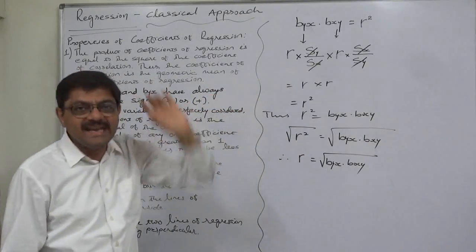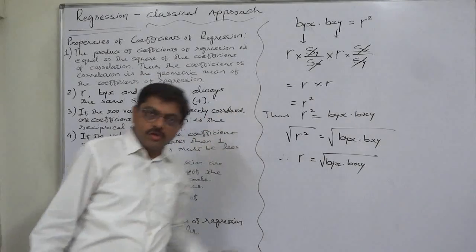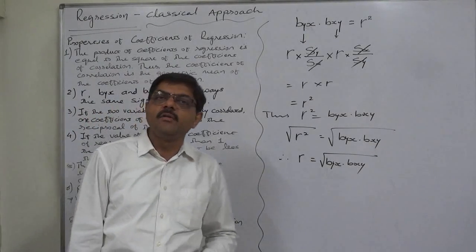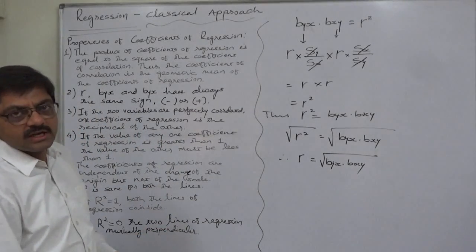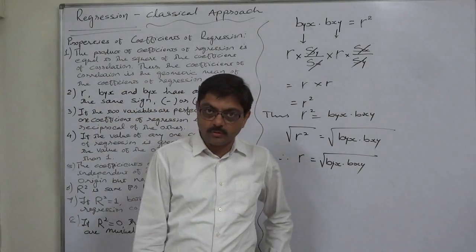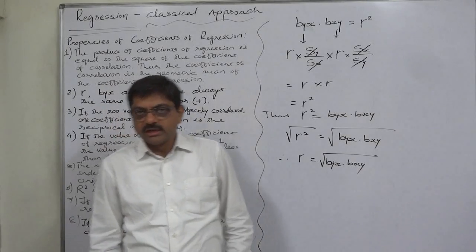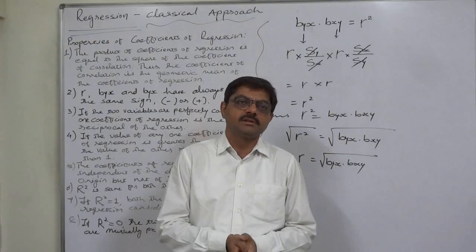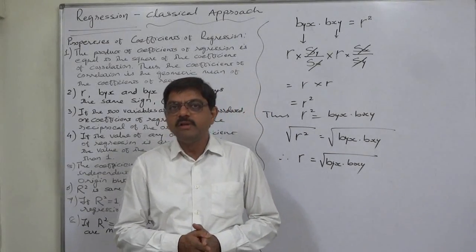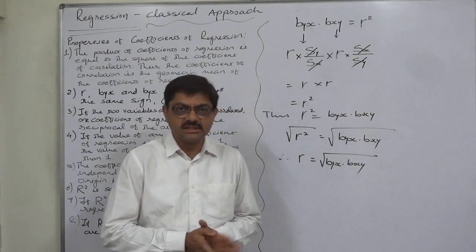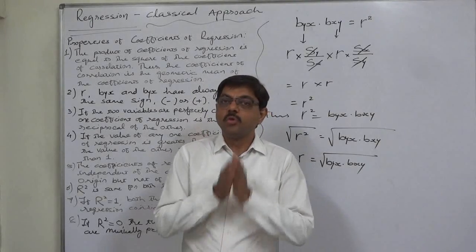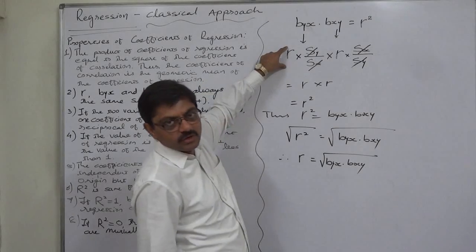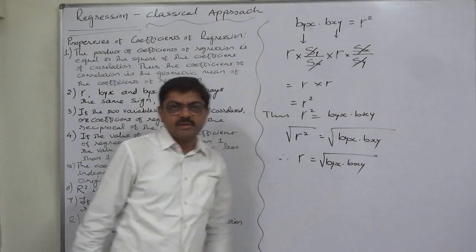The sign of the coefficient of regression is directly dependent on the sign of the coefficient of correlation. If there is negative correlation between the two variables, the coefficient of correlation and both coefficients of regression will have a negative sign. Similarly, if there is positive correlation, all three will have the same positive sign. By negative or positive correlation, we mean that if the values of two variables more or less change in opposite directions, there is negative correlation; if they change in the same direction, there is positive correlation.